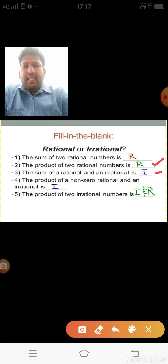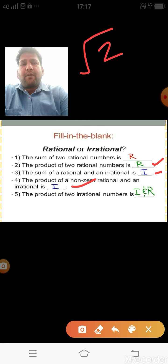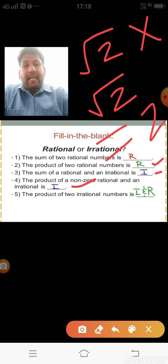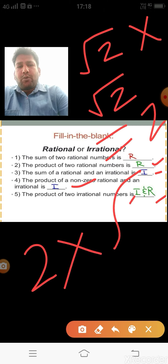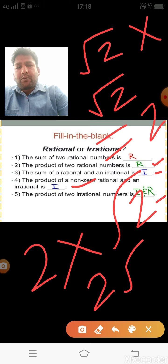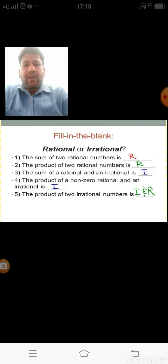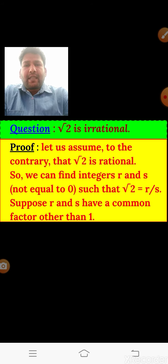Regarding the product of two irrational numbers: multiplying √2 × √2 gives (√2)² = 2, which is rational. But multiplying 2 × √2 gives 2√2, which is irrational. So the product of two irrational numbers can be either rational or irrational.